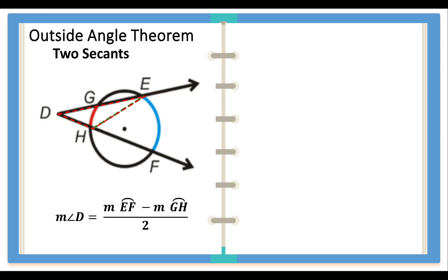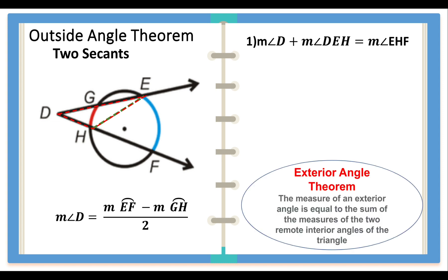In the figure we can clearly see that since there is a triangle involved, there are interior angles and exterior angles, giving us statement number one: the measure of angle D plus the measure of angle DEH is equal to the measure of angle EHF. What justifies that statement? We have the exterior angle theorem pertaining to triangles: the measure of an exterior angle is equal to the sum of the measures of the two remote interior angles of the triangle. Angle D is the blue angle, angle DEH is the yellow angle, and their sum equals the exterior angle EHF.